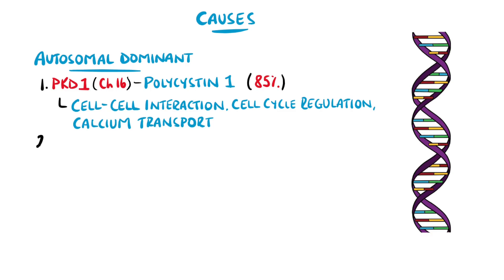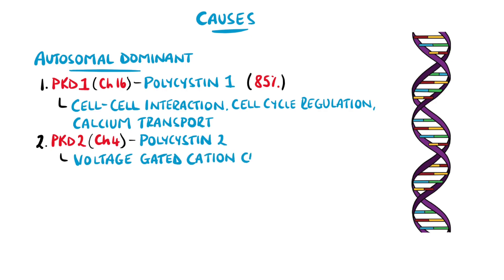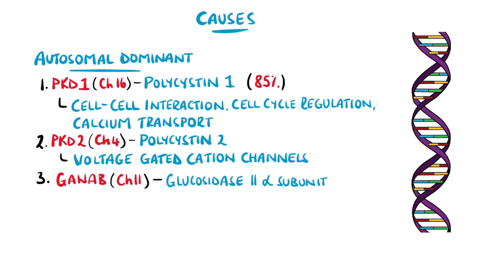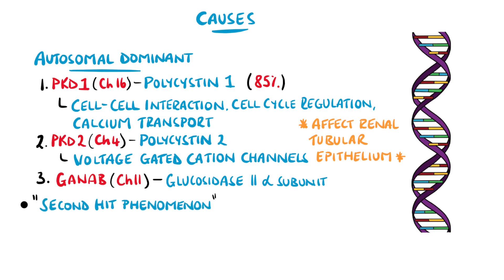The second coming from mutations in PKD2 on chromosome 4, coding for polycystin 2, which codes for voltage-gated cation channels. More recently, a third form has been hypothesized to be caused by mutations in GANAB, coding for an alpha subunit of glucosidase 2. These proteins directly affect the renal tubular epithelium. The autosomal dominant version features the second hit phenomenon, where the mutated dominant allele causes cyst formation once the normal allele is hit and becomes dysfunctional, which has near 100% penetrance.